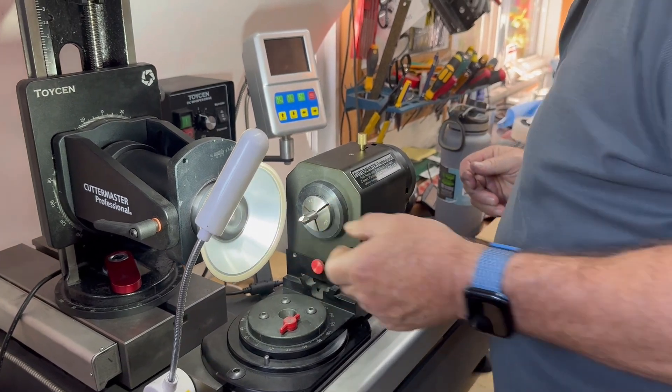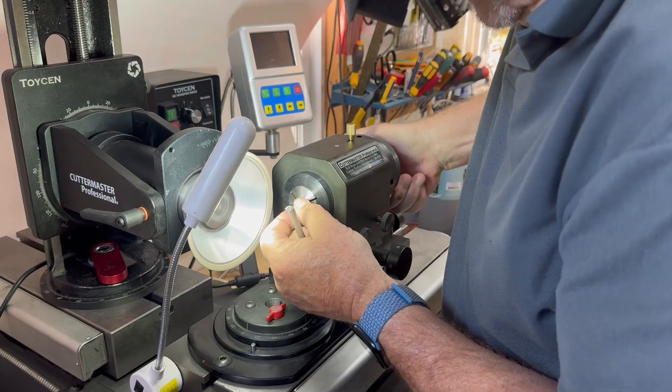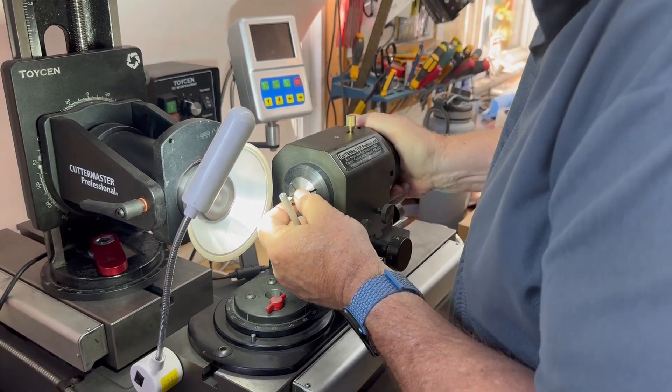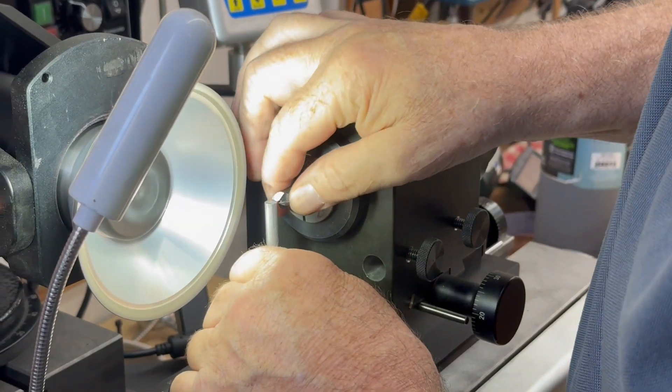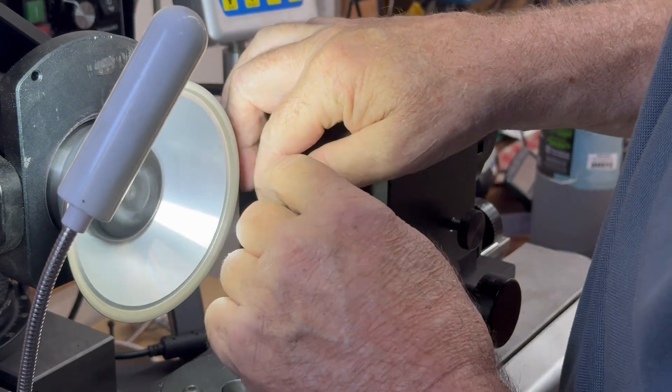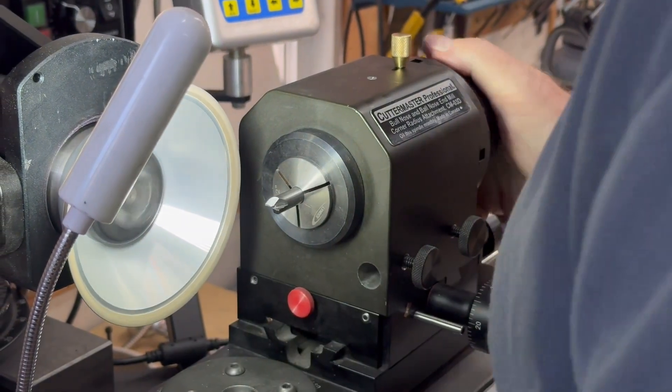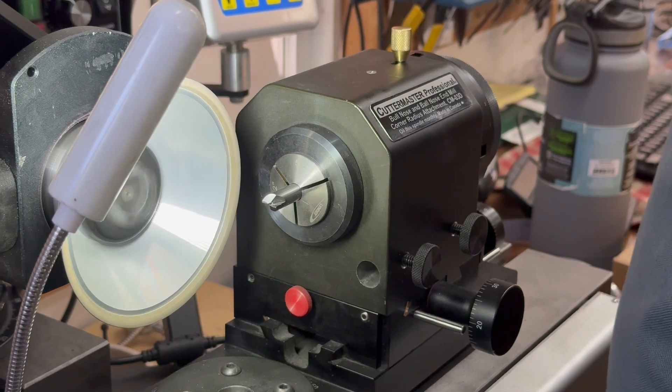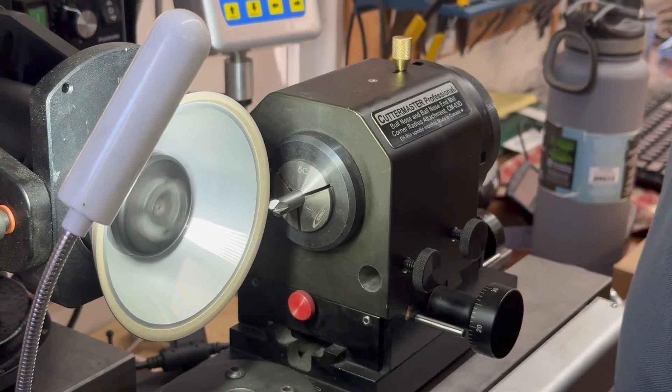Turn it up to the collet so that the tool is centered in the collet. Put the height setter in place, tighten it up. We're set at the primary height.